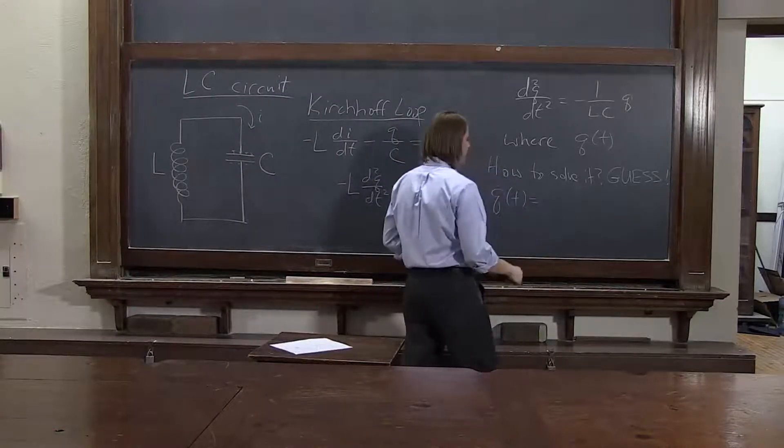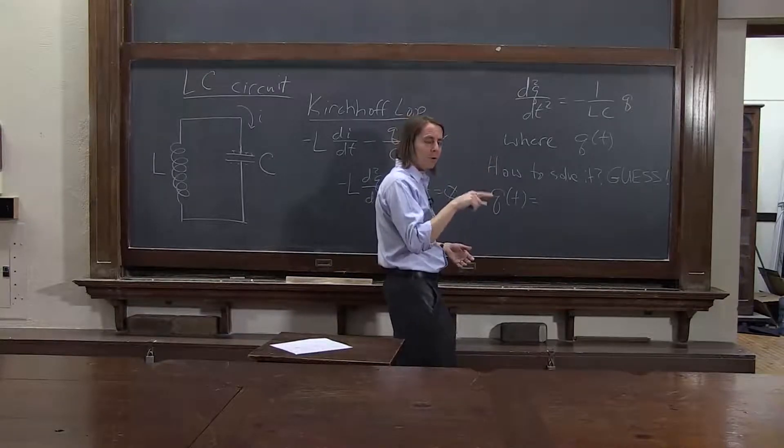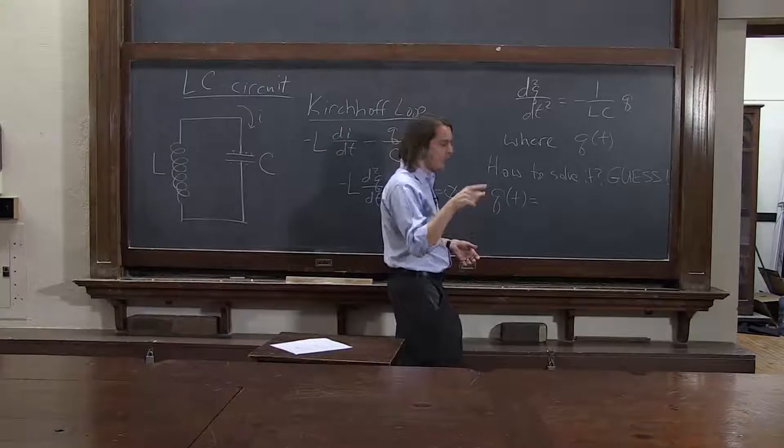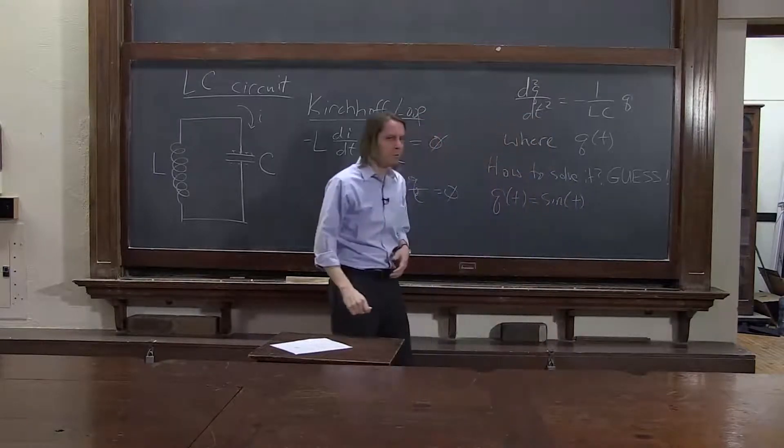Well, one might be q of t would be sine, right? Sine, derivative of sine is cosine. The derivative of cosine is negative sine. So it does get back to itself, sort of, when you take two derivatives.